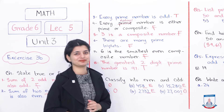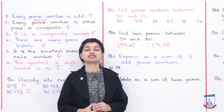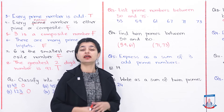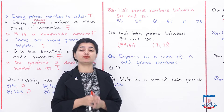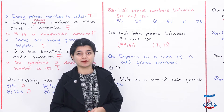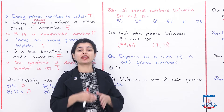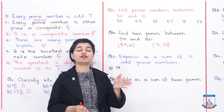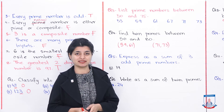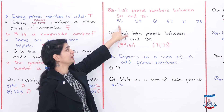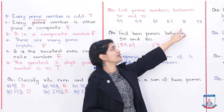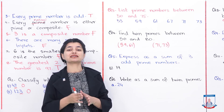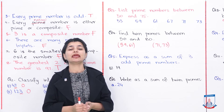Question 3: list prime numbers between 50 and 75. Using a sieve table for 1 to 100, locate 50 and 75 and identify the circled prime numbers. The prime numbers between 50 and 75 are: 53, 59, 61, 67, 71, and 73.